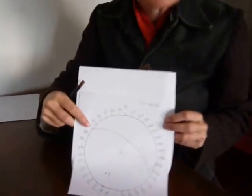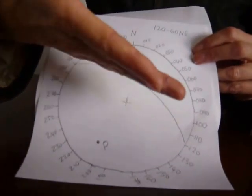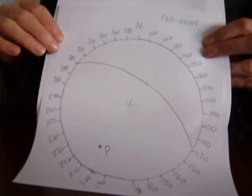Now if we have a look at that, here now is our stereo net with our plane that is striking to 120, dipping 60 degrees to the northeast.